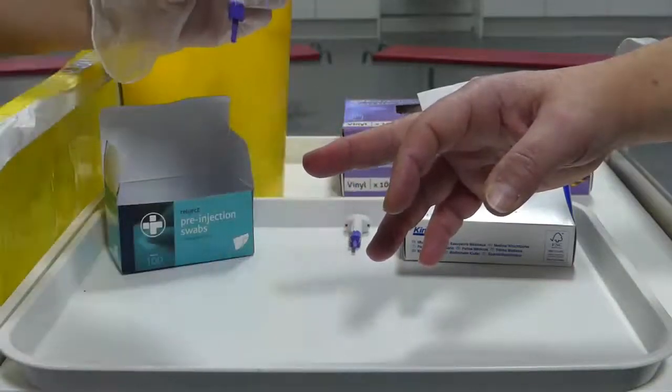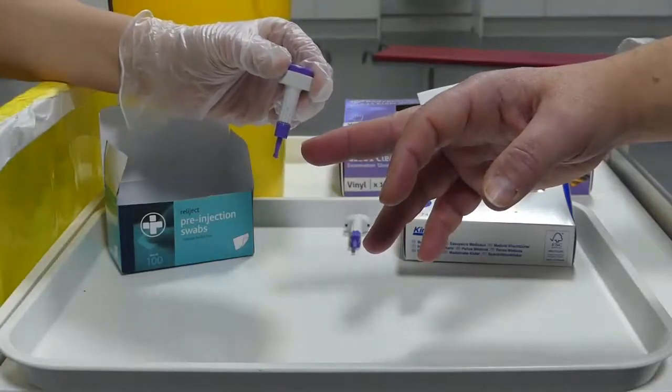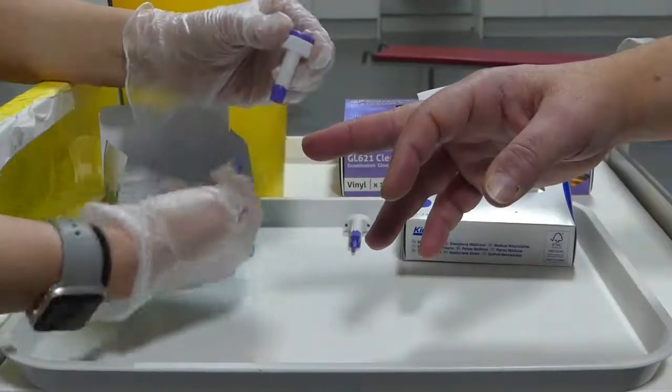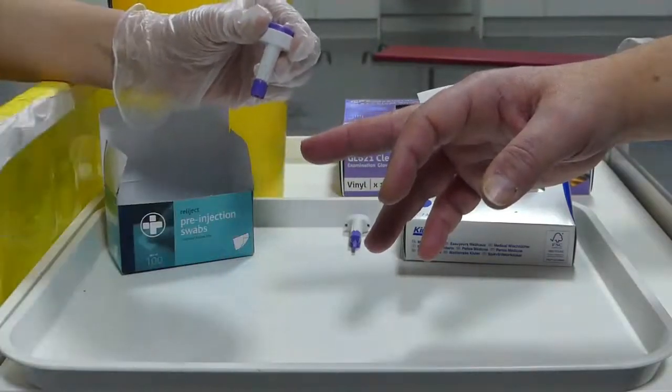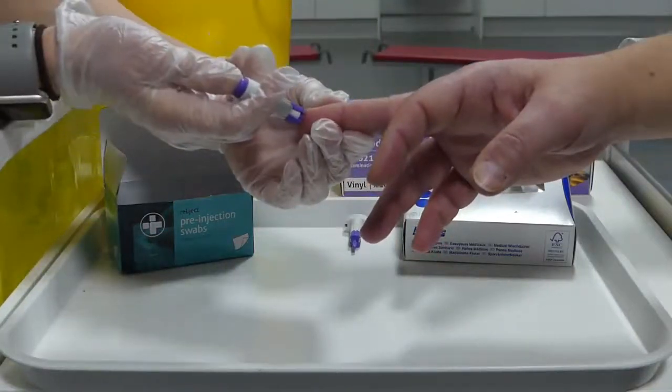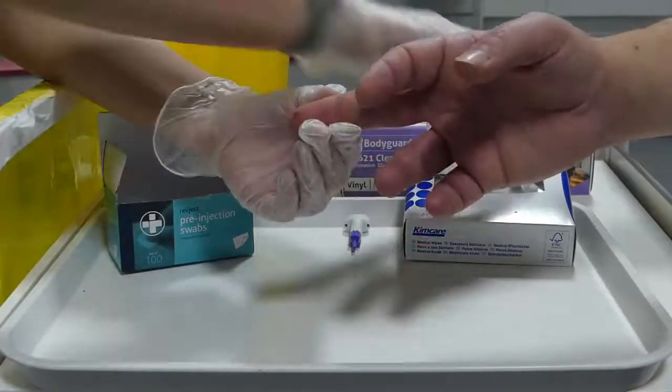Once clean, using the safety lancet we've just looked at, twist off the end purple sterile cap. Then you're going to hold the lancet, push gently into the fingertip, and we'll look at location in a moment. Then firmly press the button and you'll hear the safety lancet. Dispose of it immediately into the sharps bin.